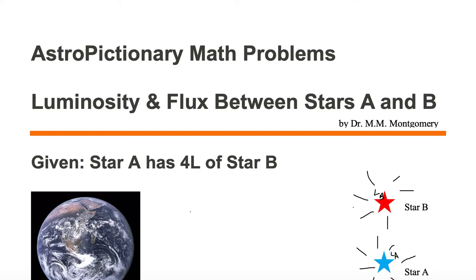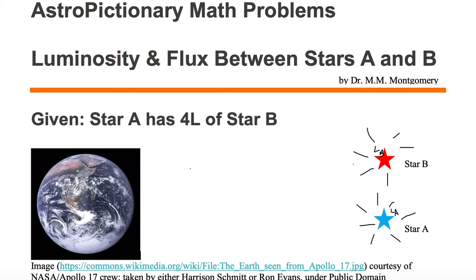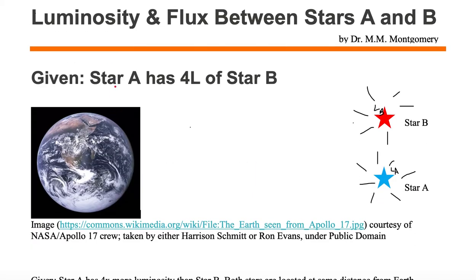We would like to calculate luminosity and flux between two stars A and B. We're given that star A has four times the luminosity of star B. We're looking at two stars: one is a red star and one is a blue star. Star B is colored red and star A is colored blue. The one that has the higher luminosity will have the bluer color.